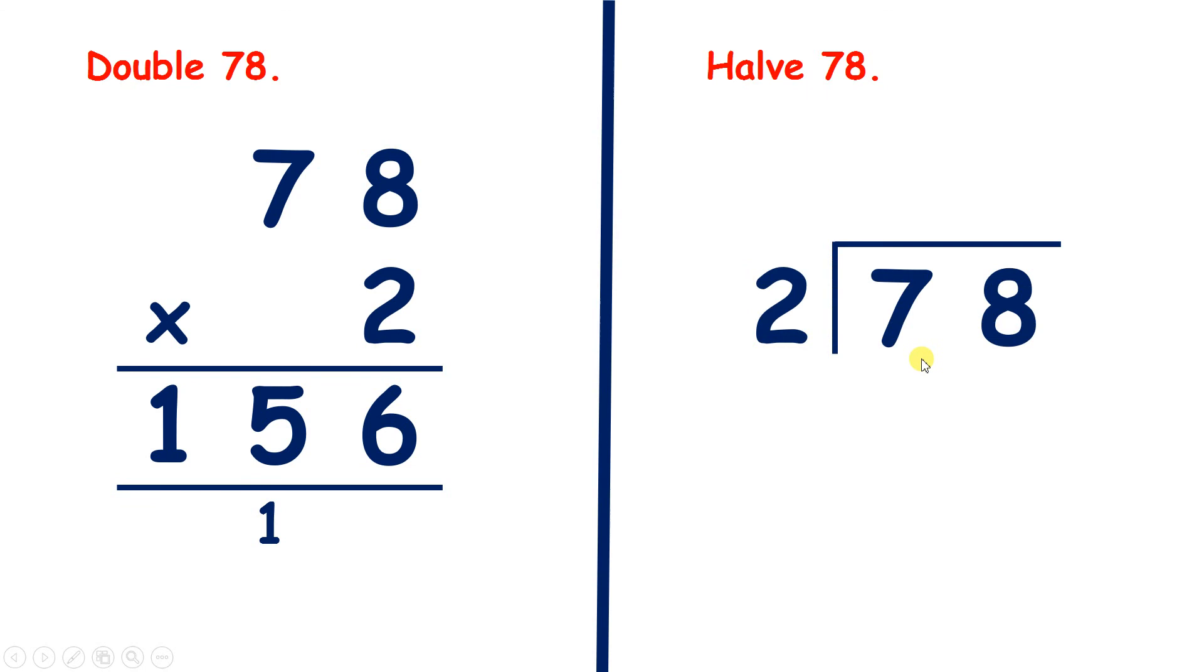Now let's find half of 78. 7 divided by 2 is 3 remainder 1, and 18 divided by 2 is 9. So half of 78 is 39.